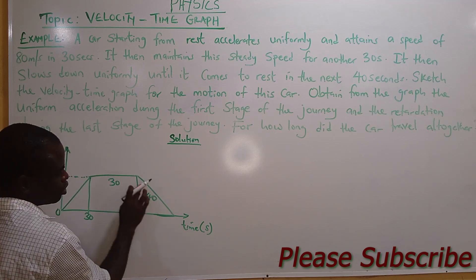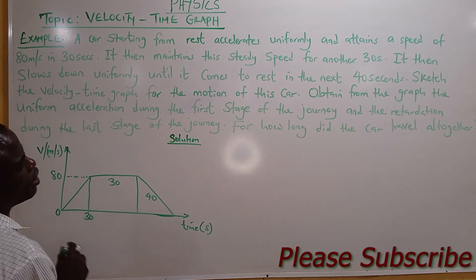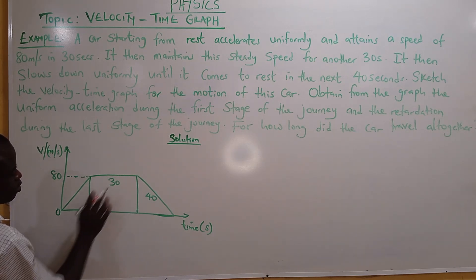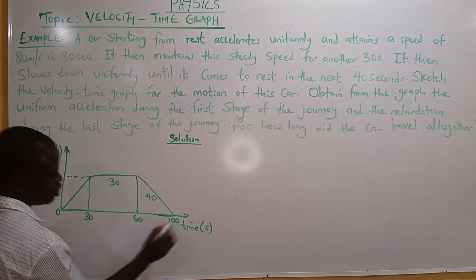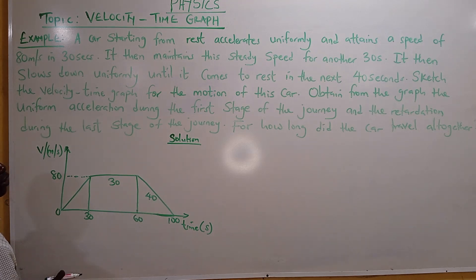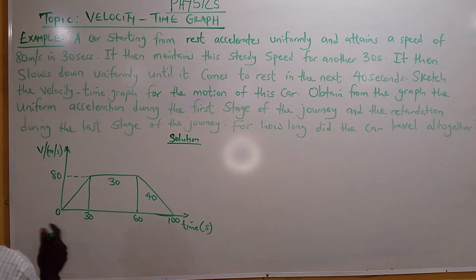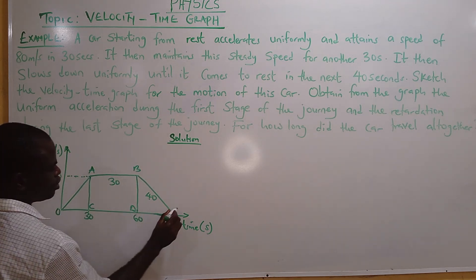Now scale the time axis on the graph. 30 plus 30 gives you 60; 60 plus 40 gives you 100. The car slows down and comes to rest in the next 40 seconds. Now obtain from the graph and label the points A, B, C, D, E.